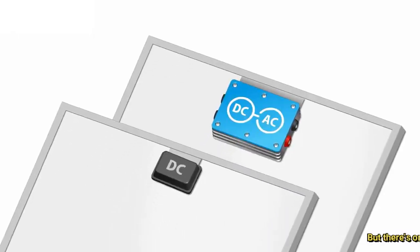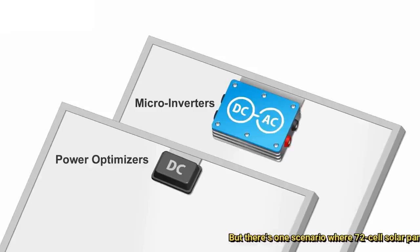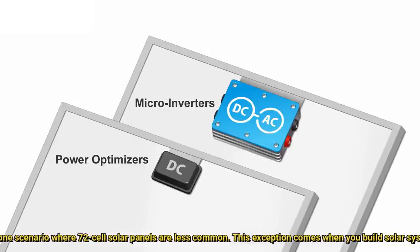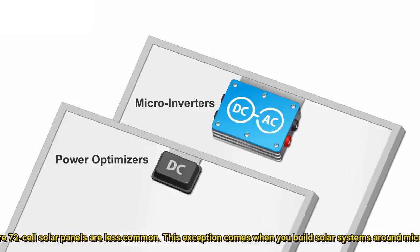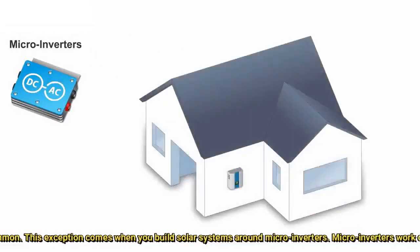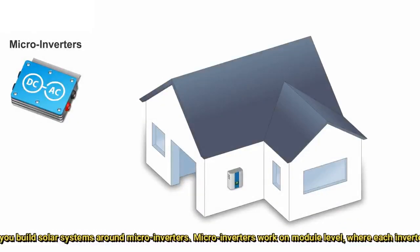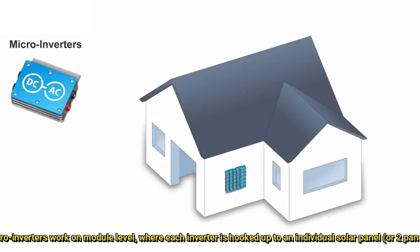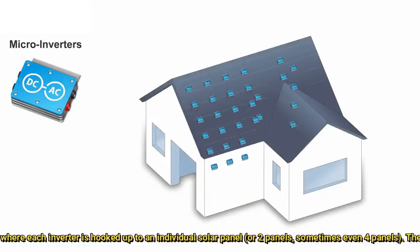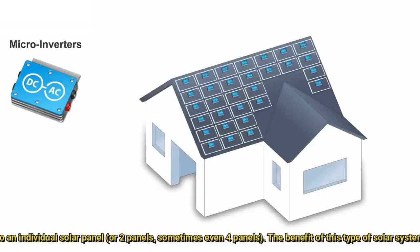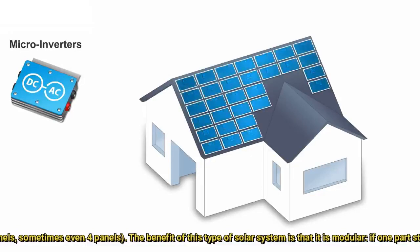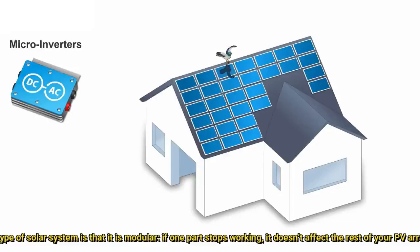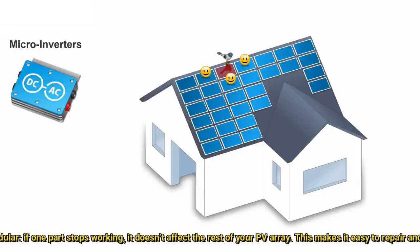There is one scenario where 72-cell solar panels are less common: when you build solar systems around microinverters. Microinverters work at the module level, where each inverter is hooked up to an individual solar panel, or two panels, sometimes even four panels. The benefit of this type of solar system is that it is modular — if one part stops working, it doesn't affect the rest of the PV array.